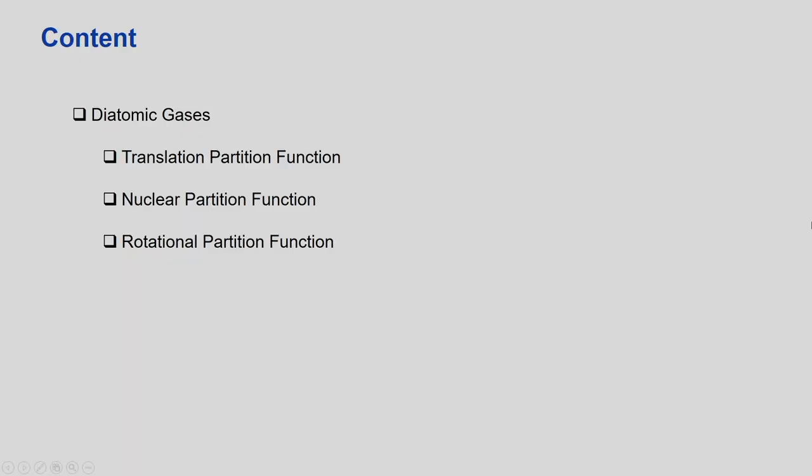In the first lecture of this module we will start with the diatomic gases. We will cover the translational partition function, the nuclear partition function, and the rotational partition function. The translational and nuclear partition functions are mostly similar to what we discussed for monoatomic gases — the expressions remain the same. There will be some additional modes of energy in diatomic cases: rotational and vibrational. In this lecture we will take care of the rotational part; subsequent lectures will cover the vibrational part.